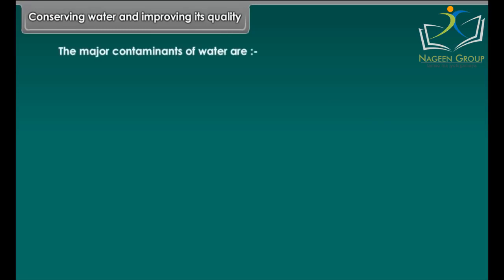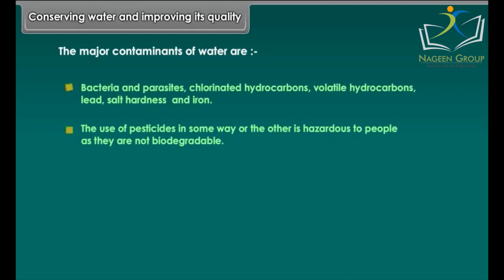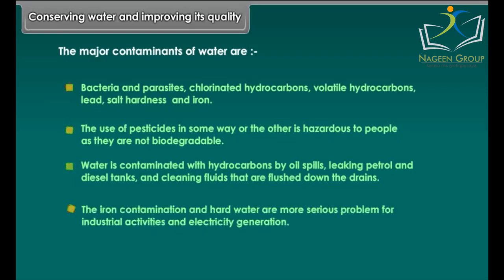Conserving water and improving its quality: Major contaminants of water include bacteria and parasites, chlorinated hydrocarbons, volatile hydrocarbons, lead, salt hardness and iron. Pesticides are hazardous as they are not biodegradable. Water is contaminated with hydrocarbons by oil spills, leaking petrol and diesel tanks, and cleaning fluids flushed down drains. Iron contamination and hard water are more serious problems for industrial activities and electricity generation.